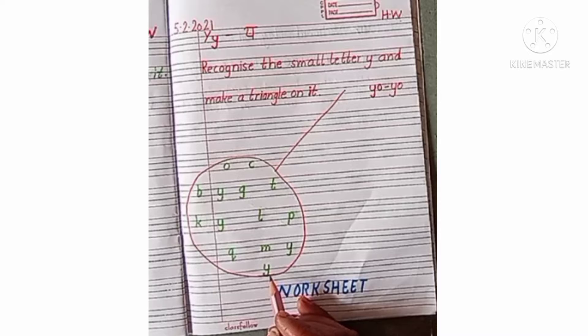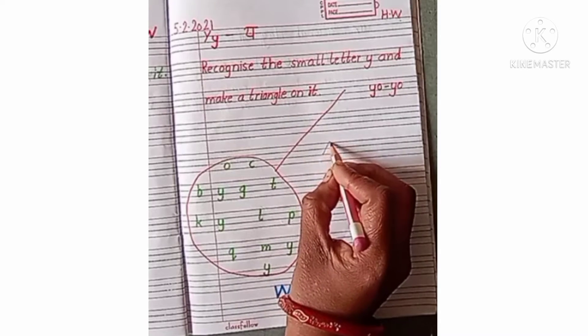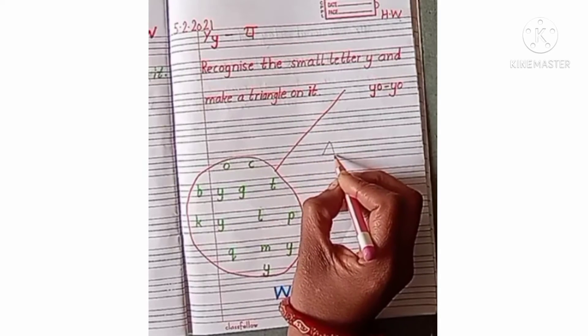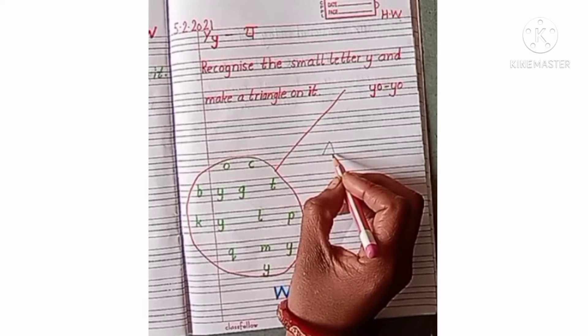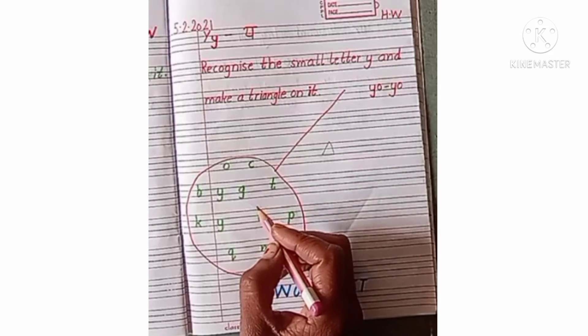First of all recognize the small letter Y and make a triangle on it. यो यो में न मैंने कुछ alphabets write down की है small आपने क्या करने है small y को recognize करने है and make a triangle shape on it like this ठीक है इससे आपको triangle shape की भी recognition हो जाएगी और small letter y की भी